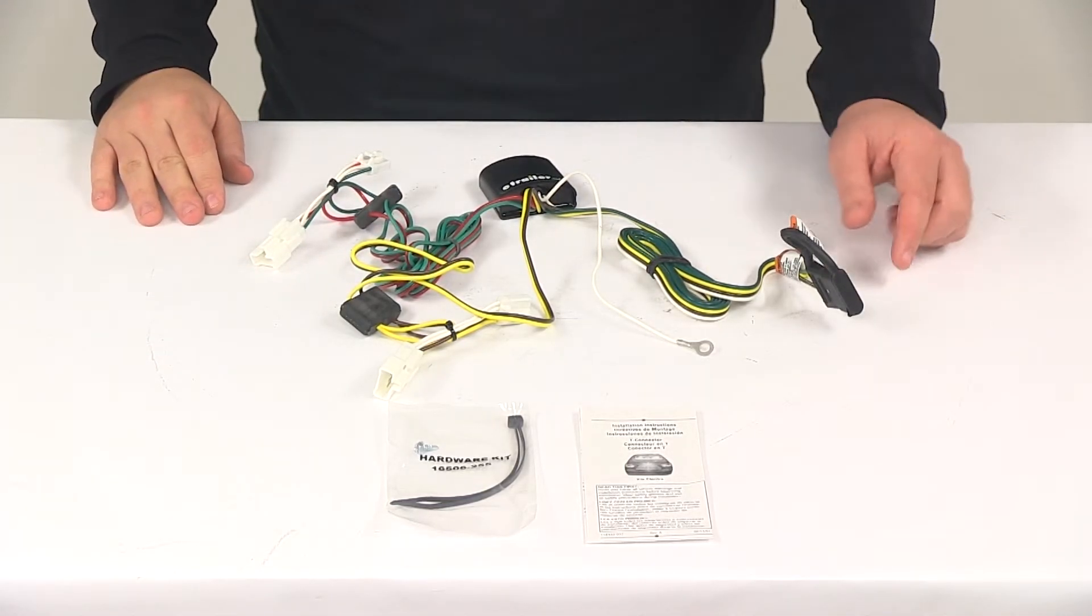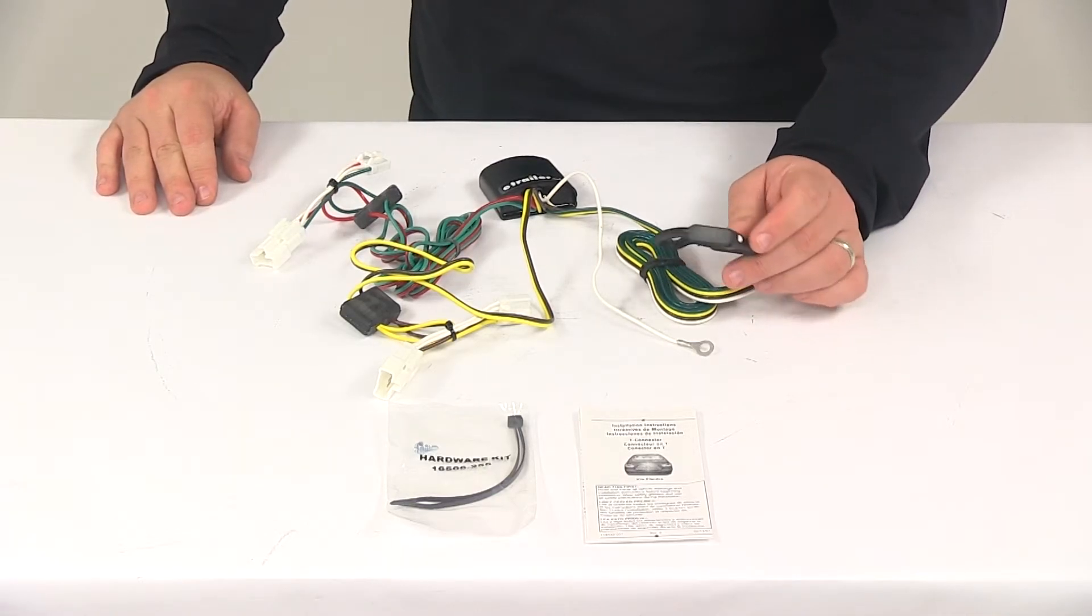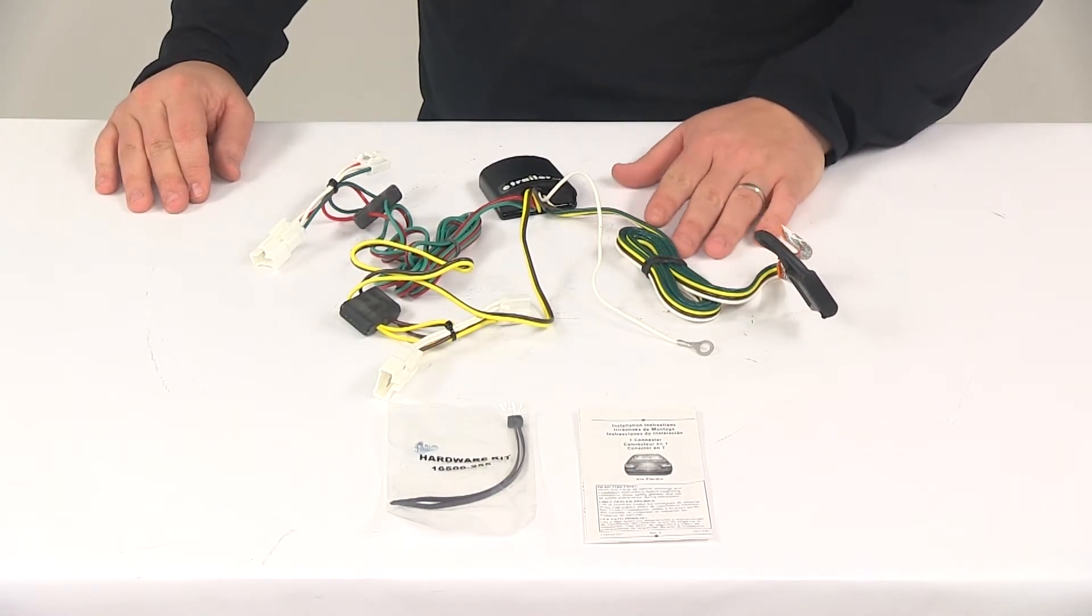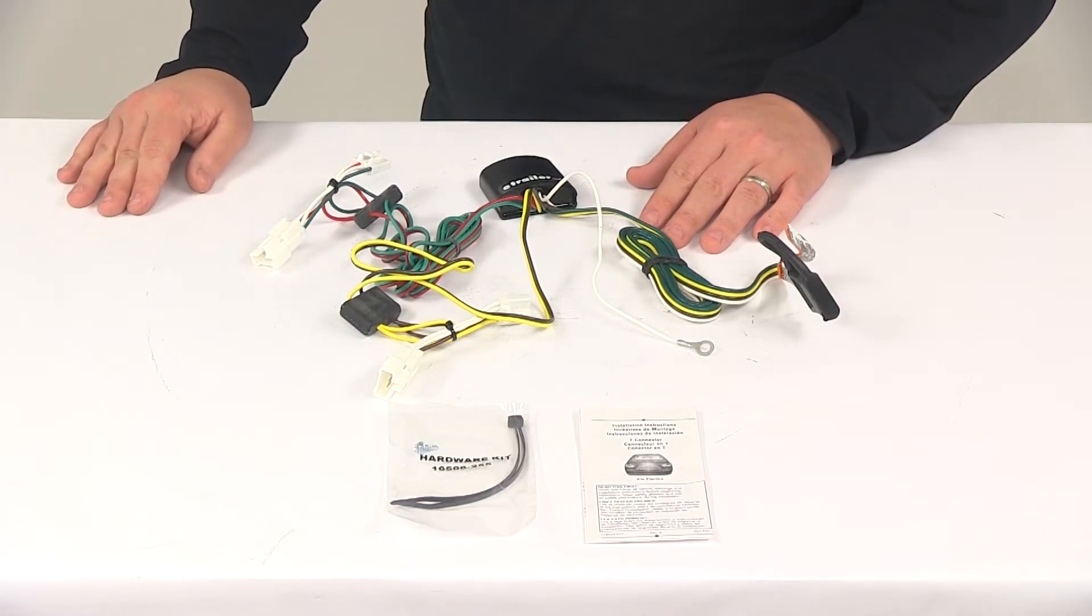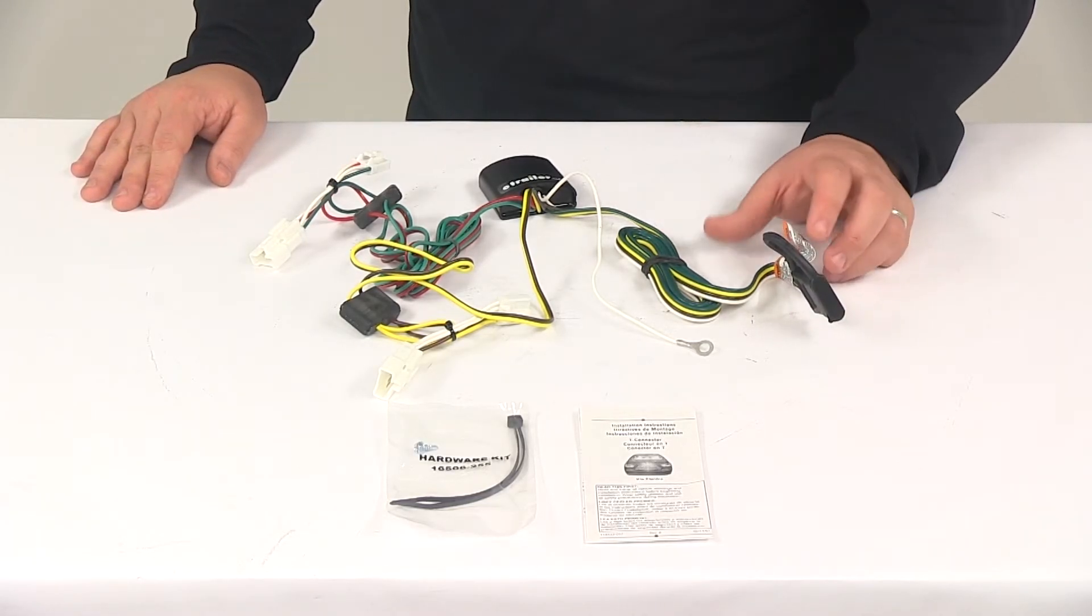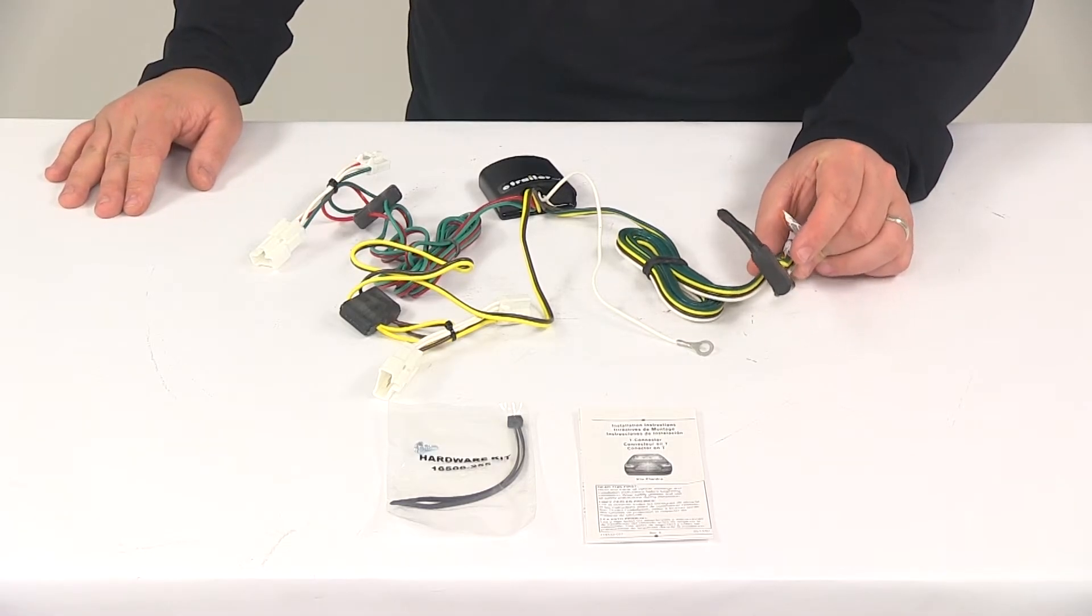Once your installation is complete, the four-way connector will be stowed within the trunk of the vehicle. There's plenty of wiring so you can extend it out the back when you're ready to make your connection. When you're not towing anything, you can wind it back up and store it inside the vehicle's storage area.